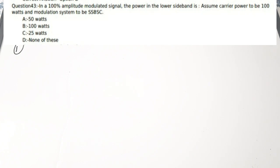This is part 4 of the polytechnic lecturer in electronics previous year question discussions. We are going to see some more questions in this video. The first question: in a 100% amplitude modulated signal, the power in the lower sideband is — assume carrier power to be 100 watts.